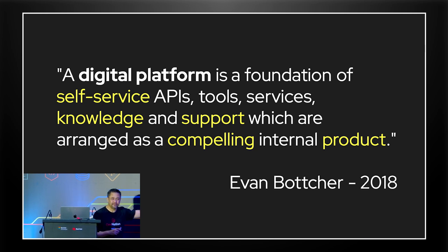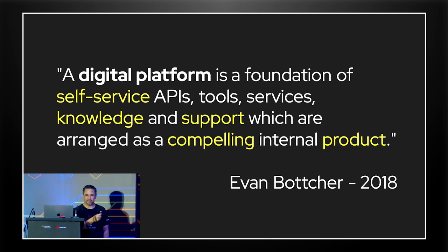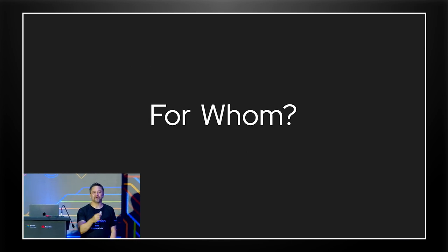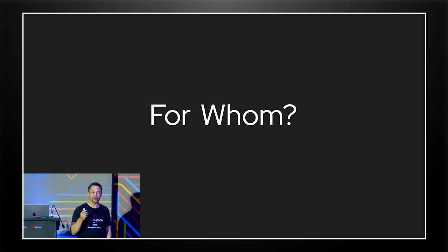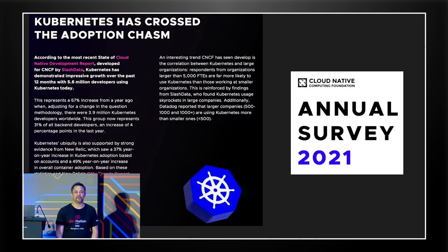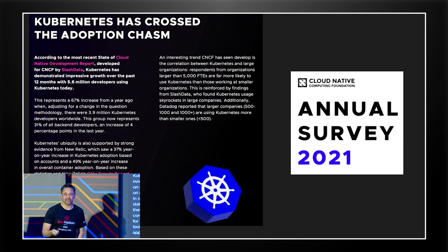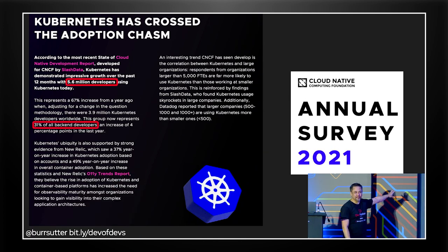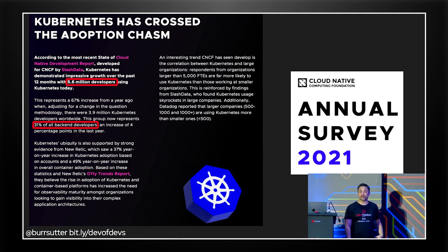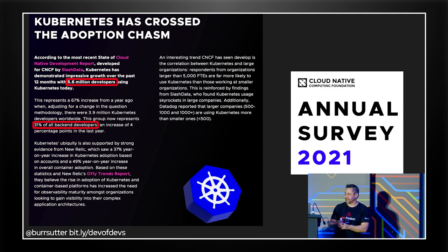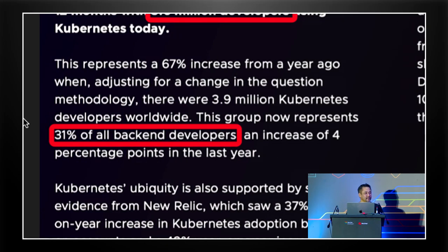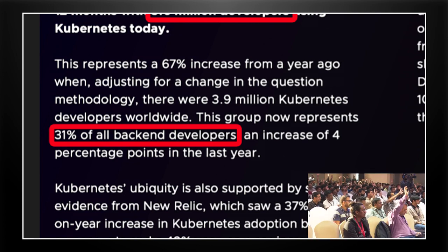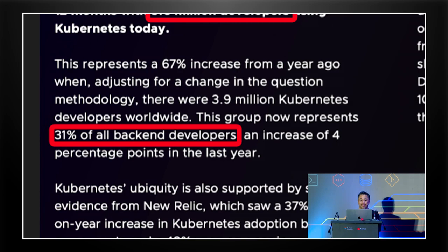The digital platform is a foundation for self-service APIs, knowledge, and support, arranged as a compelling product. Who does the developer's developer work for? The platform engineer works for developers — those stream-aligned application developers, Spring Boot developers, Node.js and Python Flask developers. They also work for the 5.6 million developers that are part of the CNCF Kubernetes ecosystem, representing 31% of the actual backend developer workforce. How many people here already know and work with Kubernetes? See the majority of you — fantastic. You're in the right place today.